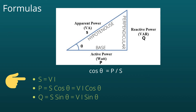Similarly, sin θ equals perpendicular upon hypotenuse — that is, sin θ equals reactive power upon apparent power, or Q/S. So Q = S·sin θ, giving us reactive power Q = VI·sin θ. In summary, active power P = VI·cos θ and reactive power Q = VI·sin θ.